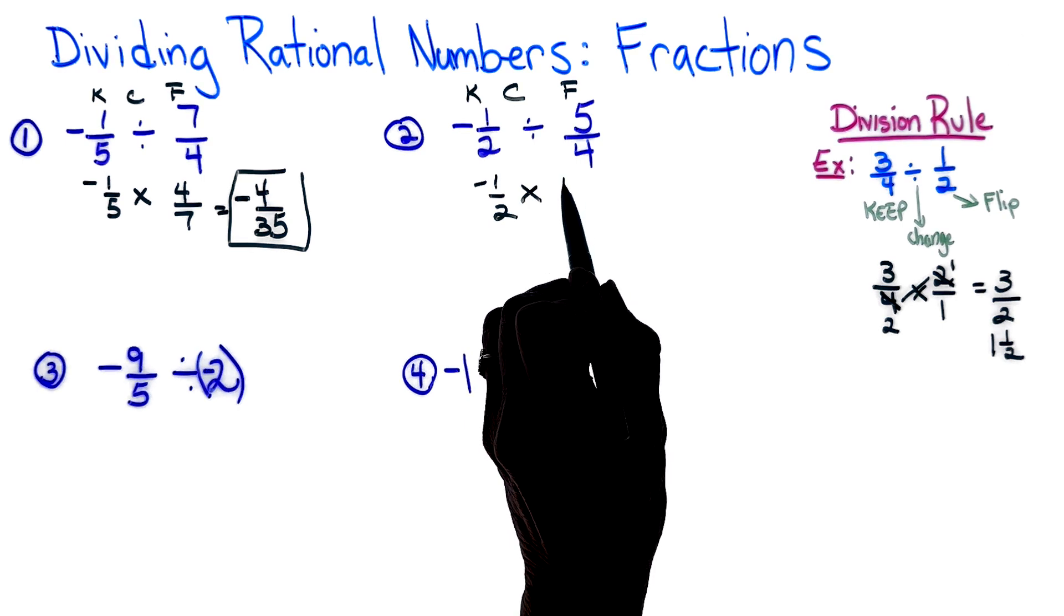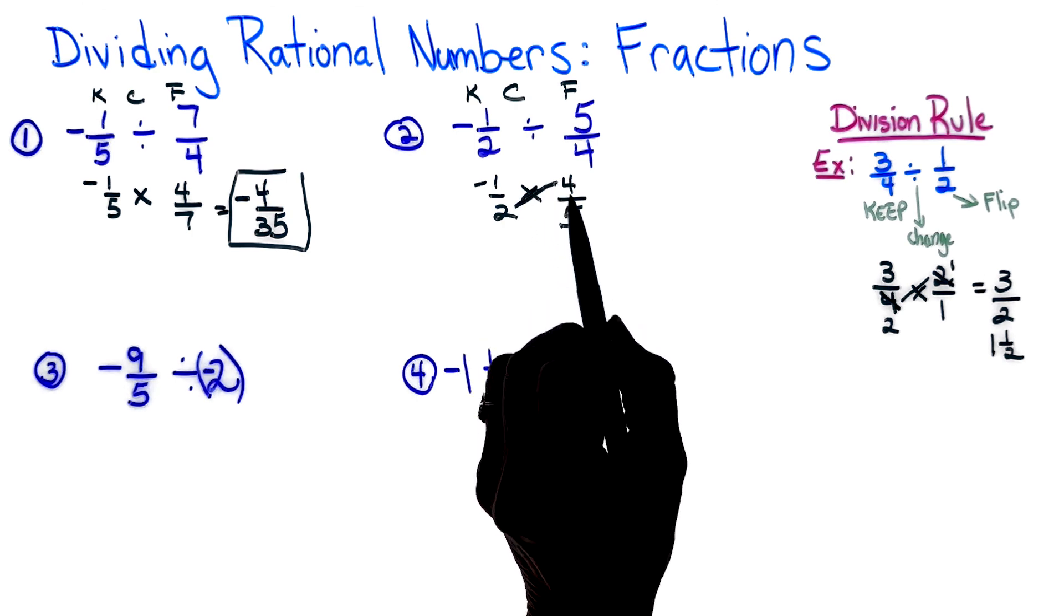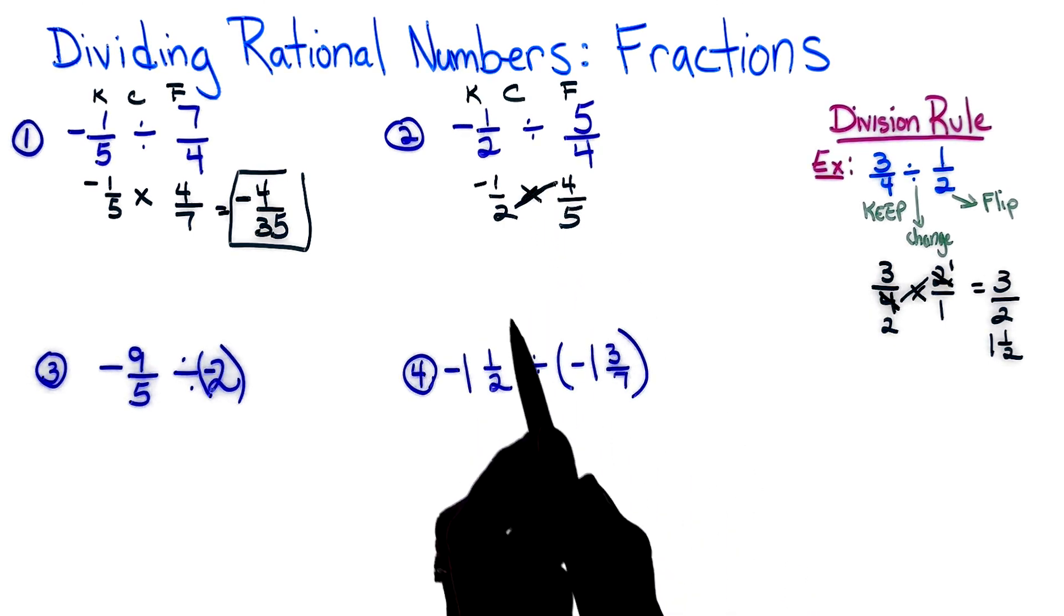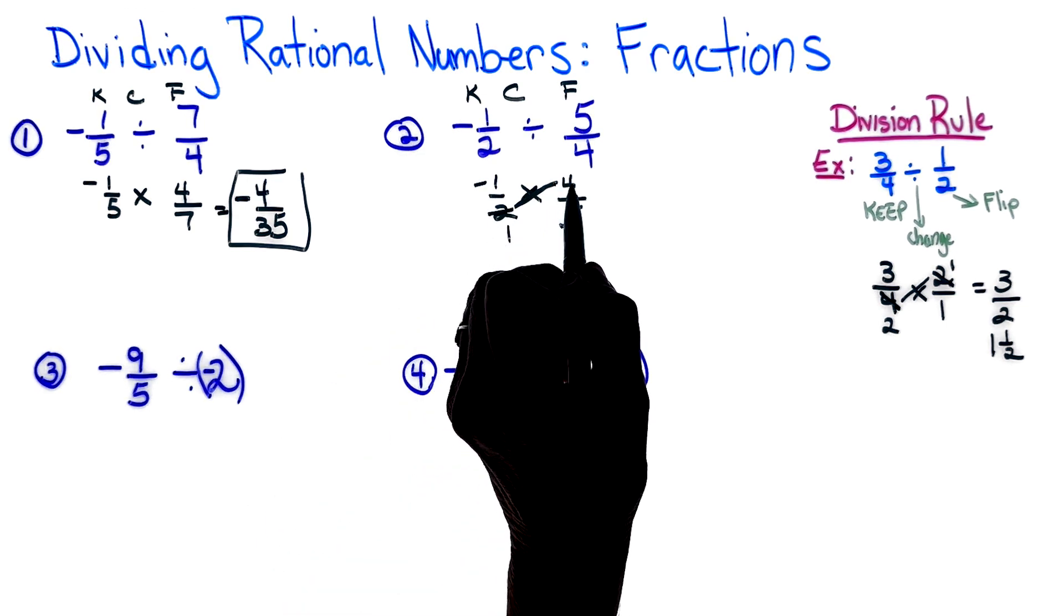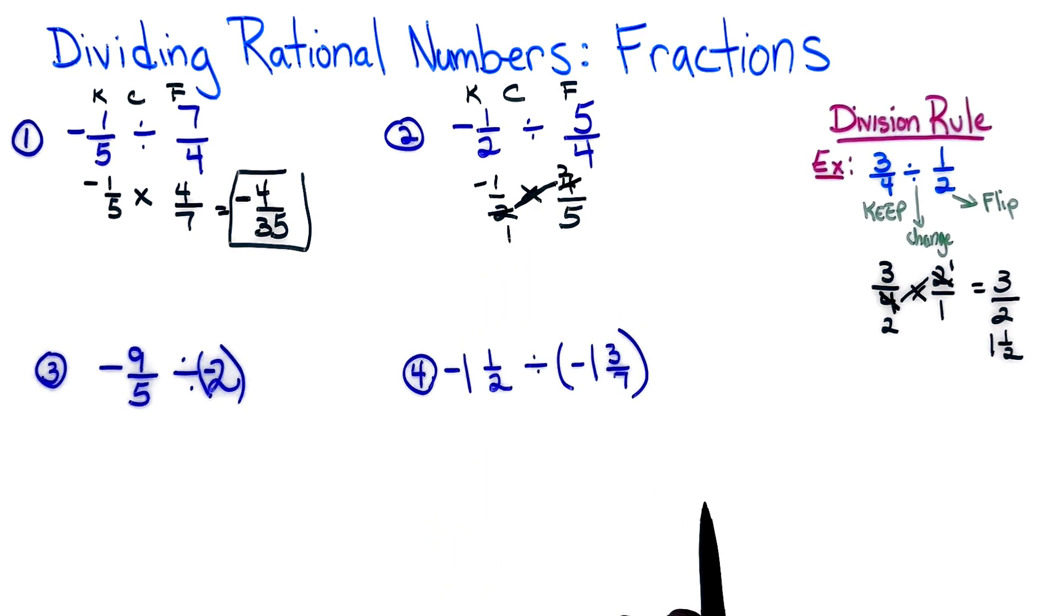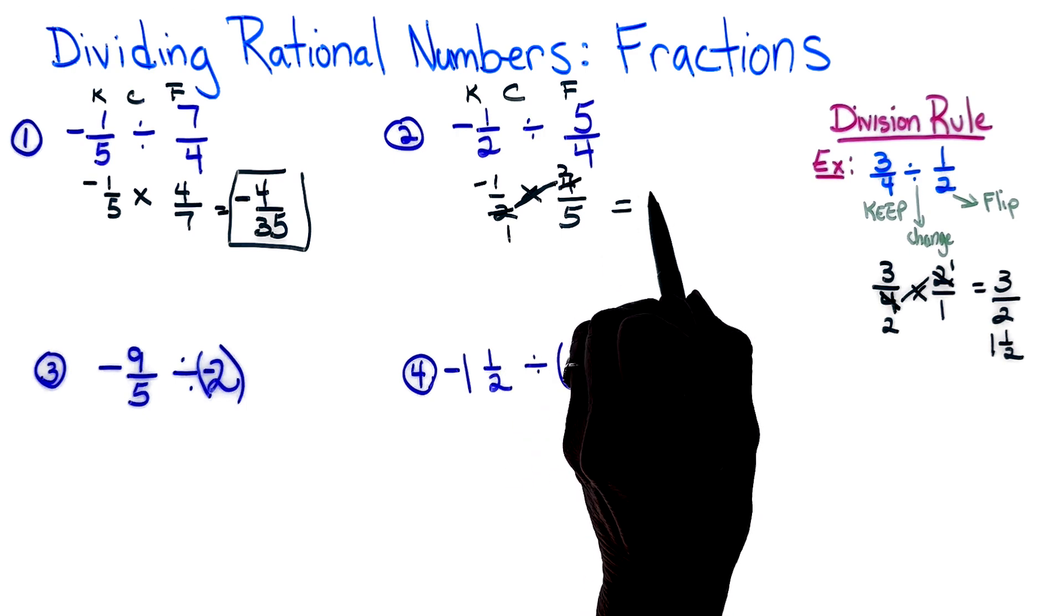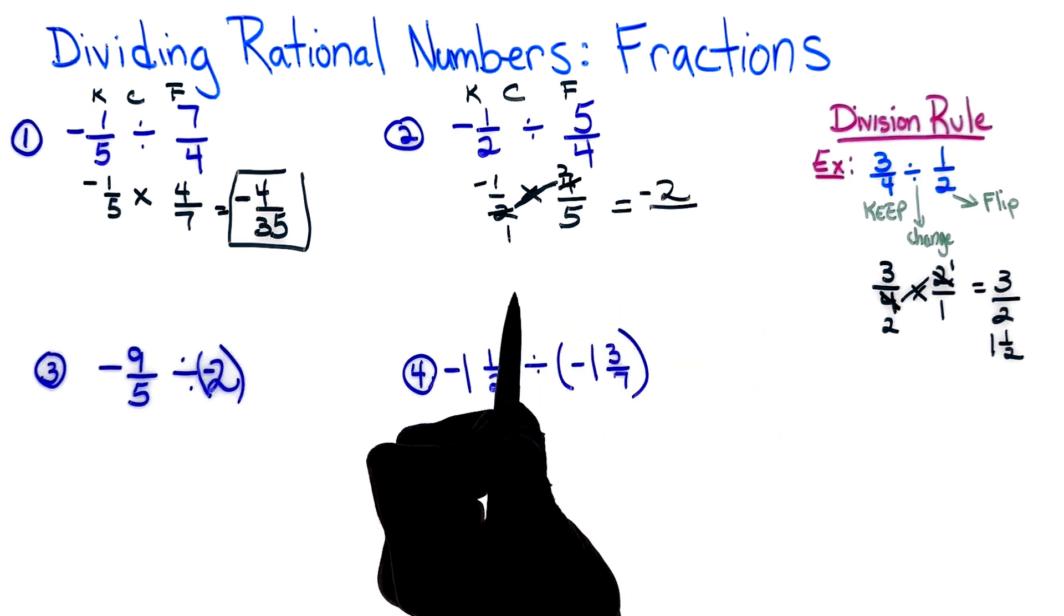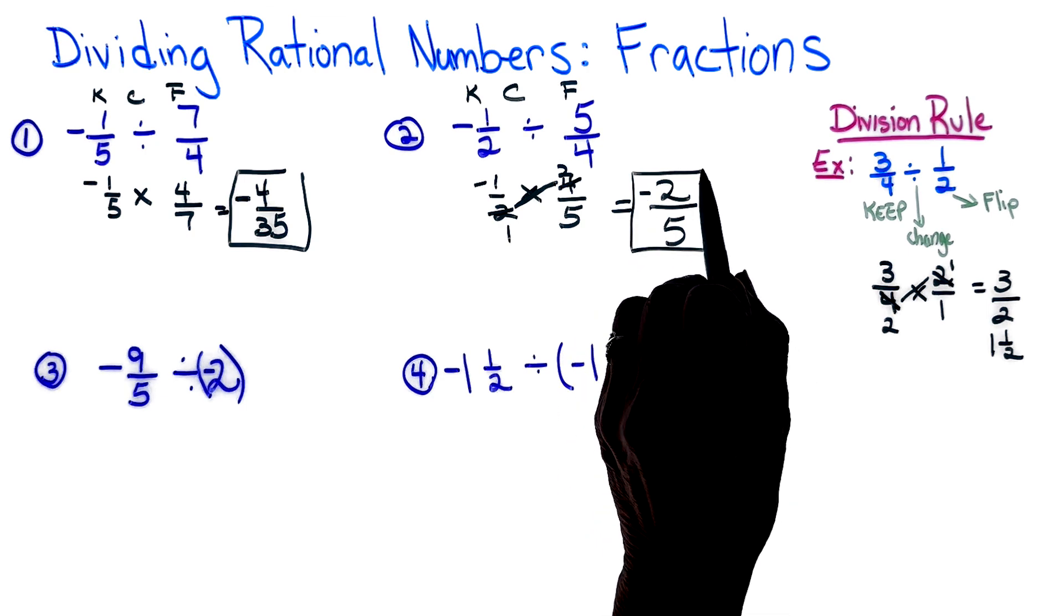So now I am looking at what's across here and I see I can simplify before I multiply. So I'm going to divide two by two is one, four divided by two is two. And now when I multiply straight across I get a negative 2/5, and that is in simplest terms so we're finished.